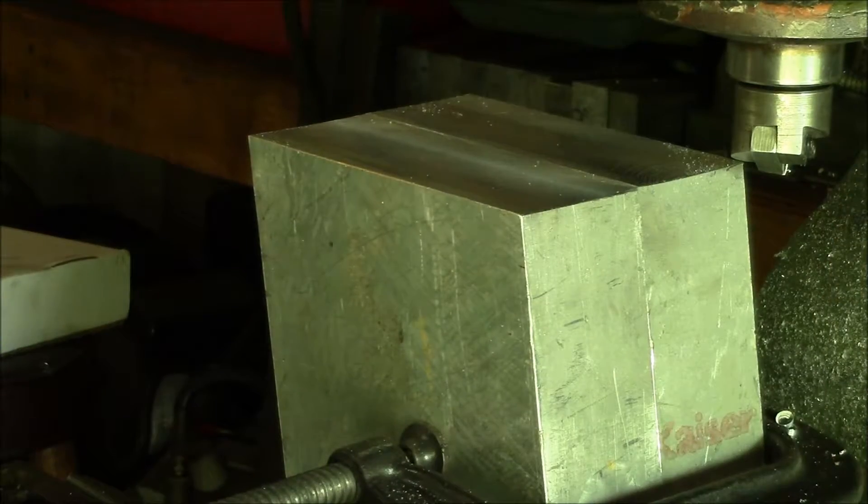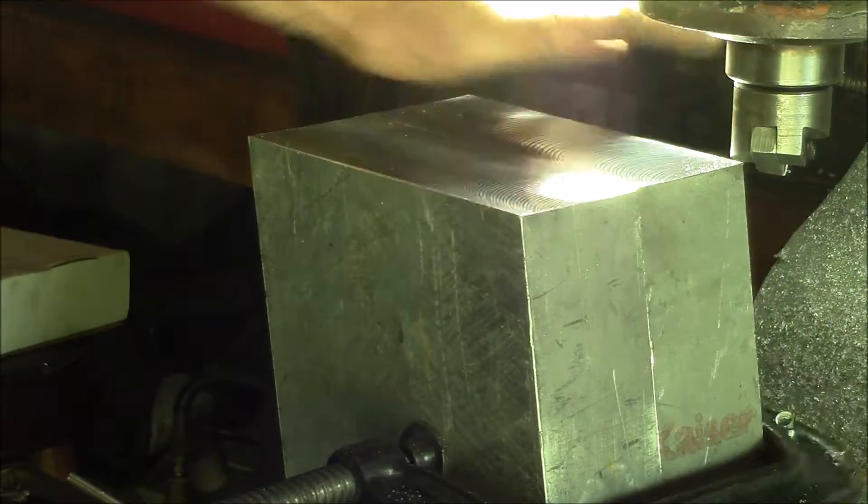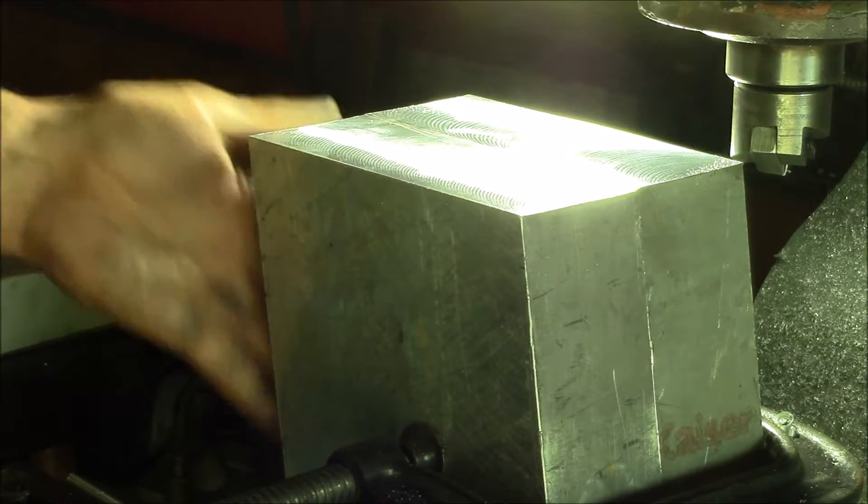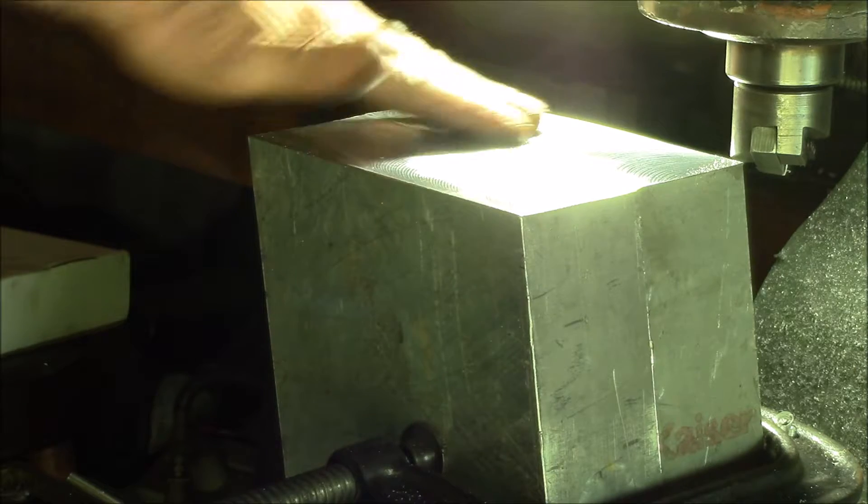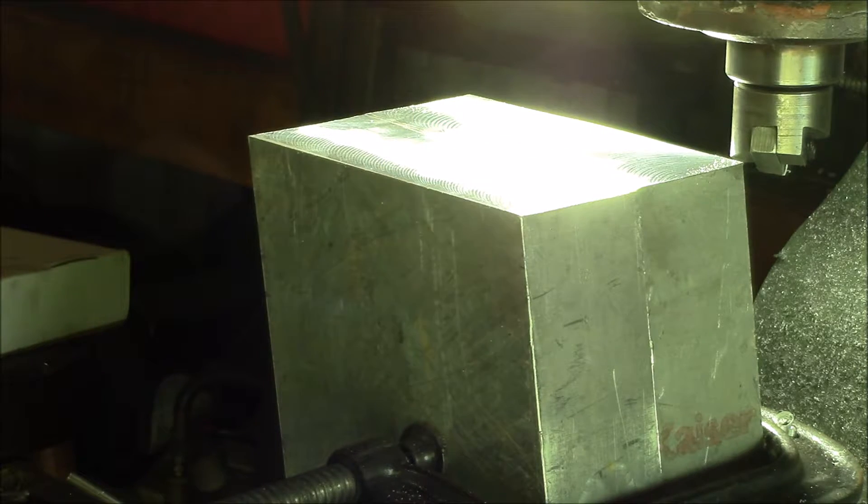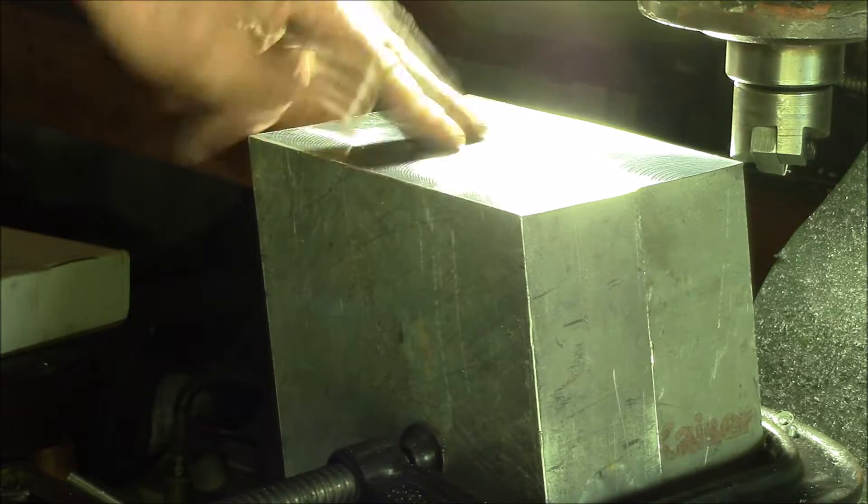There we go, got the blocks faced off so they're flush across the top, they're flush at the bottom and pretty much square on the side. So they should be equal now. It's just time to mark them and drill them, clean them up a little bit and they're ready to ship.